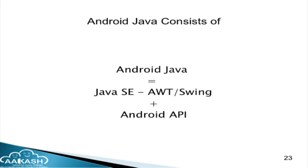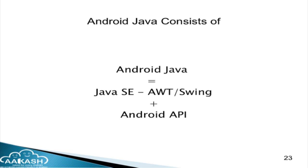Android is based on Java and follows Java syntax and many things from Java, but there is a difference. Android Java consists of Java standard implementation minus AWT and Swing, plus Android API. AWT and Swing, if you have worked on them in Java, are not supported in Android — they have been completely removed. Android came up with their own UI which is part of the Android API, and this Android API was added because of touchscreen. We need extensive touchscreen support when dealing with Android smartphones and tablets. That is why they removed AWT and Swing and added the Android API. This is how standard Java and Android Java differ.